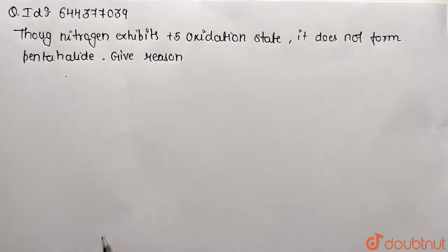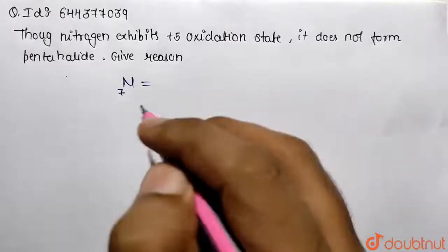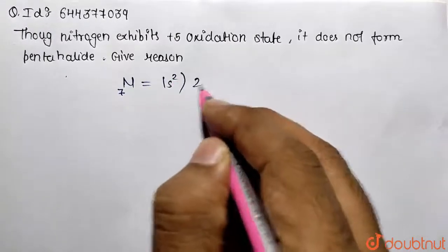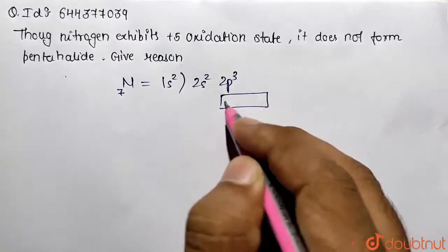be clarified by writing the electronic configuration for nitrogen. In case of nitrogen, its atomic number is 7, so the configuration is 1s² 2s² 2p³. Here these are being filled as the half-